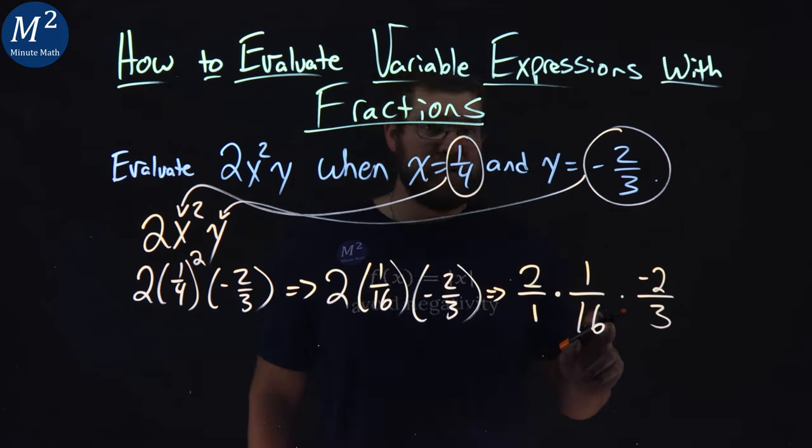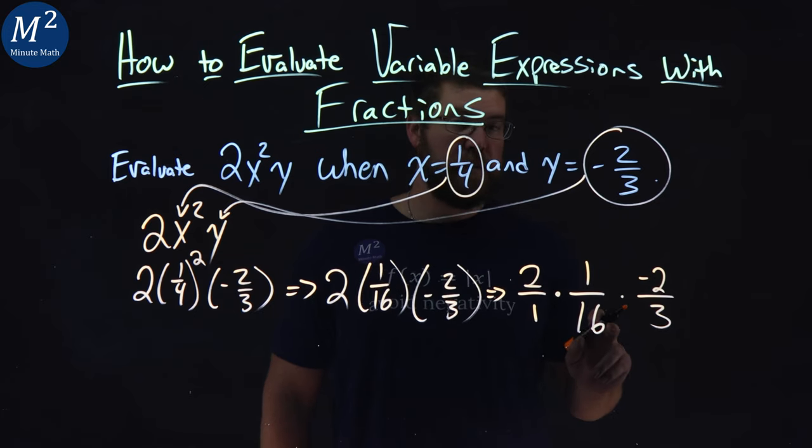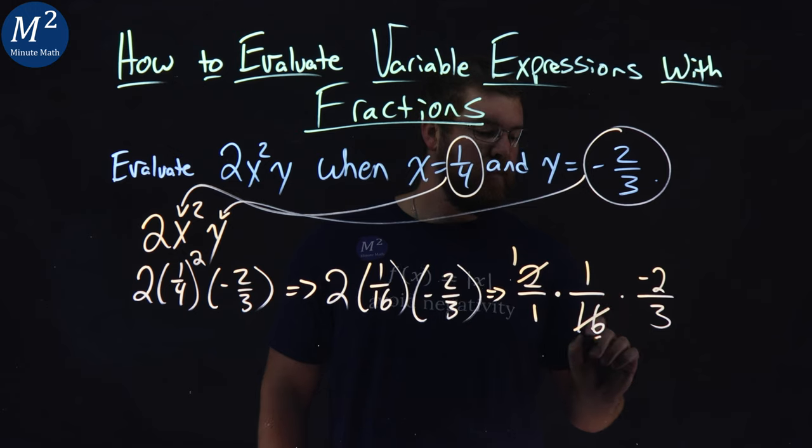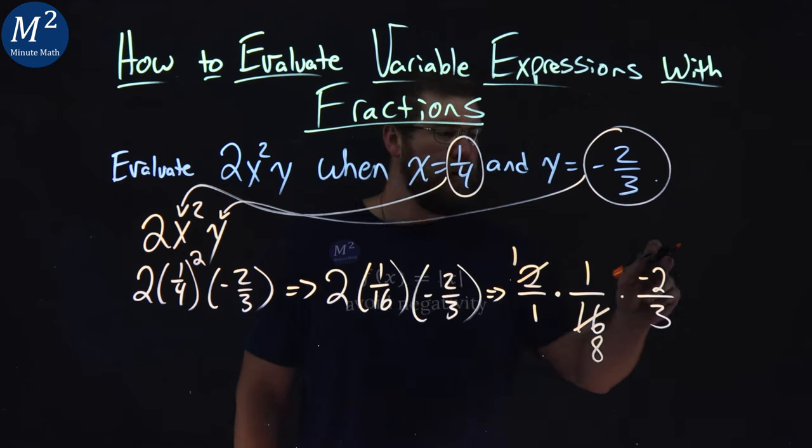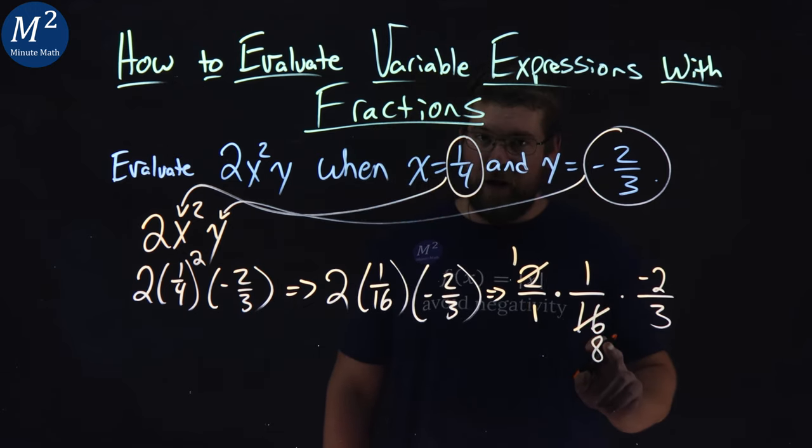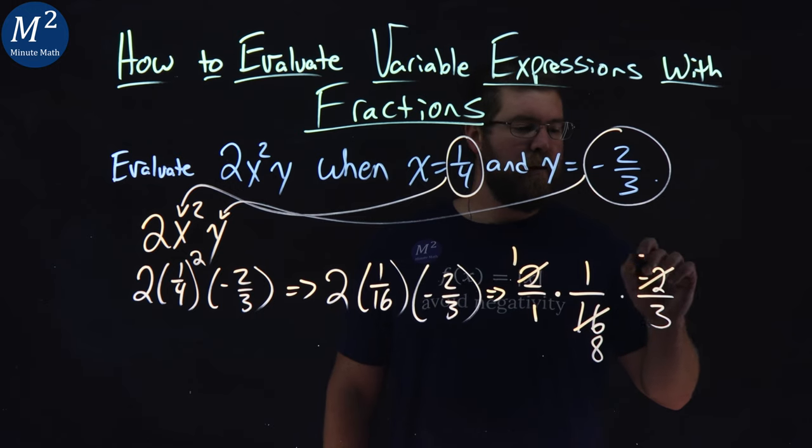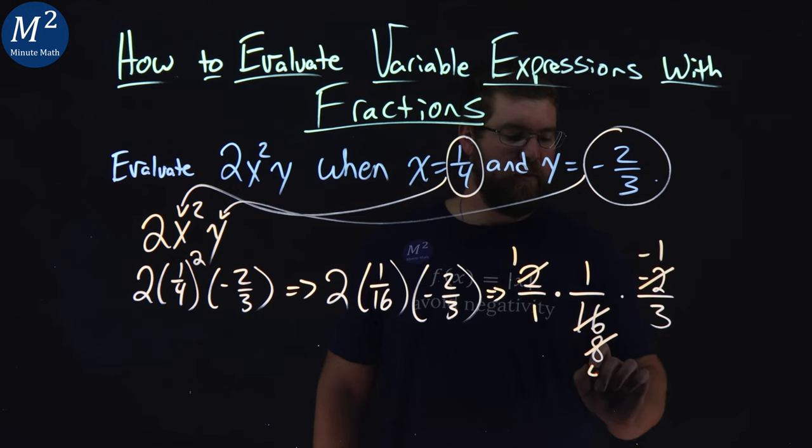Now, 2 goes into 16, so we can take a 2 out of both of them. This 2 becomes a 1, this 16 becomes an 8. 2 goes into 8 as well, which is 4, so we cross it off. We have a negative 1 up here, and this becomes a 4.